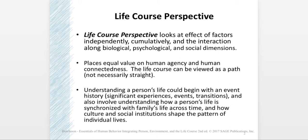The text says the life course can be viewed as a path, but it's a path that isn't necessarily straight — it has lots of twists and turns. When we look at life development over time, we look at events, experiences, and transitions to understand the person in light of what they've experienced. This perspective also helps us understand how a person's life is synchronized with the family's life across time, through generations and different phases the family goes through. It also looks at interactions between culture and social institutions, both in the present and historically, and how they shape the pattern of our lives — a more complex kind of look at the human life course.